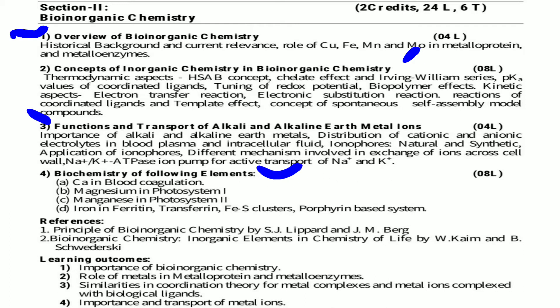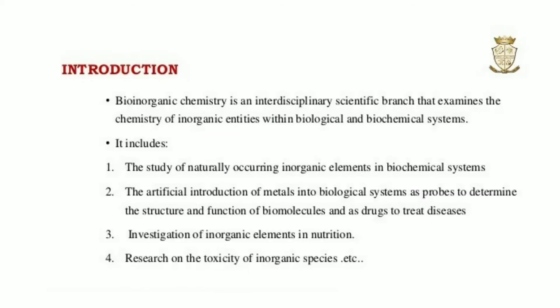The last topic is the biochemistry of the following elements: calcium in blood coagulation, magnesium in photosystem I, manganese in photosystem II, iron in ferritin, transferritin, Fe-S clusters, and porphyrin-based systems. For references, we have 'Principles of Bioinorganic Chemistry' by Lippard and Berg, and 'Bioinorganic Chemistry: Inorganic Elements in the Chemistry of Life' by Kaim and Schwederski.